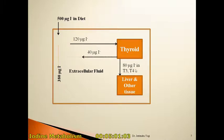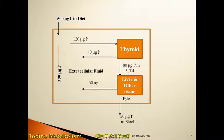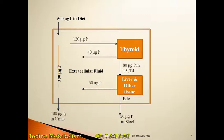Out of the 80 micrograms of iodide secreted by the thyroid gland to the liver and other tissues, around 60 micrograms is secreted back to the extracellular fluid, and the remaining 20 micrograms is secreted into the bile and excreted by the stool. Near about 480 micrograms of iodide is excreted in the urine out of the total 500 micrograms ingested. That is the flowchart of iodine metabolism in our body.